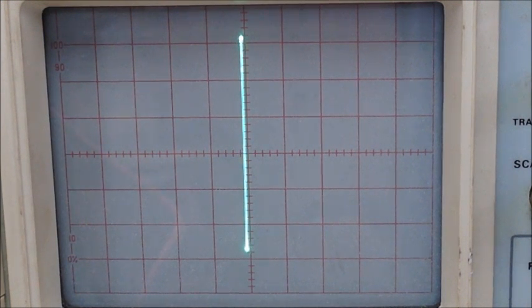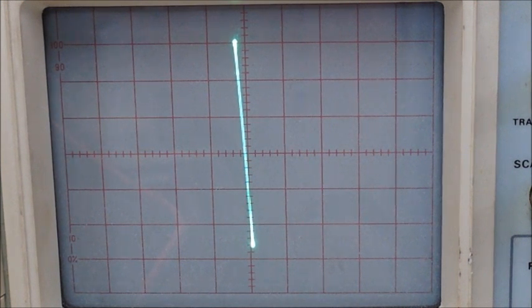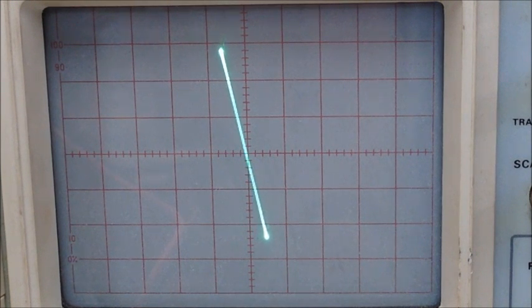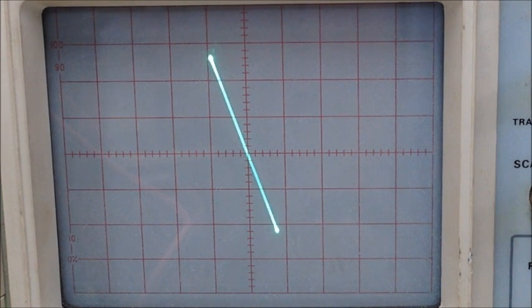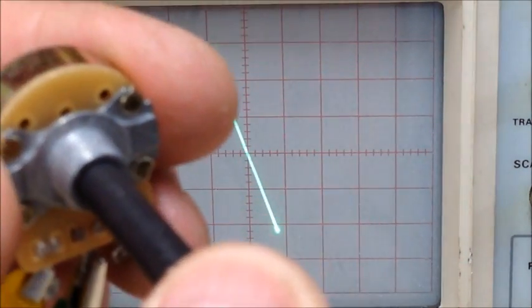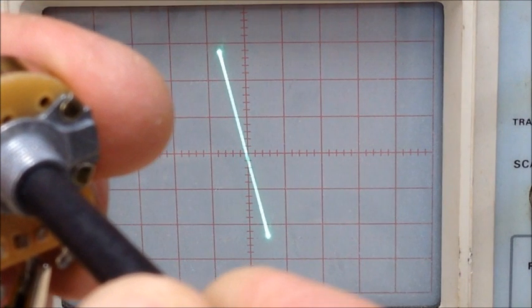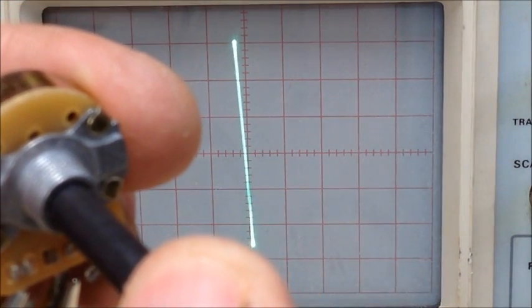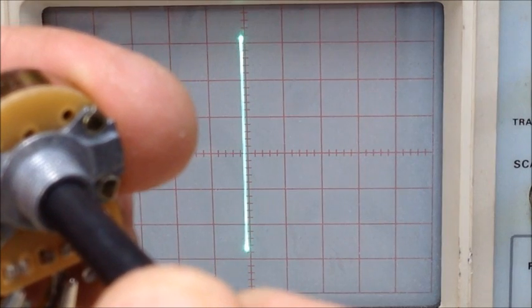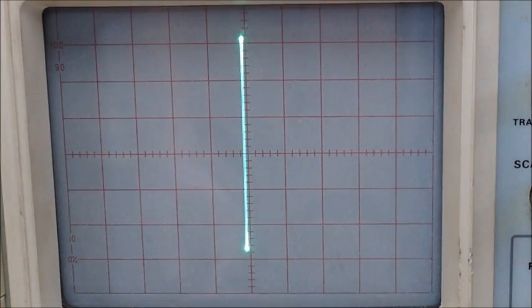But as I turn the wiper of the potentiometer very slowly and increase the resistance what you actually see is that that trace starts to move and this is a great way of determining whether the pot has dead spots or whether there's a nice smooth change. And now I'm fully on the other side I'm fully clockwise over here and as I just move it back very slowly you'll see that the trace as we approach the anti-clockwise position is vertical again. Nice way of characterizing potentiometers.